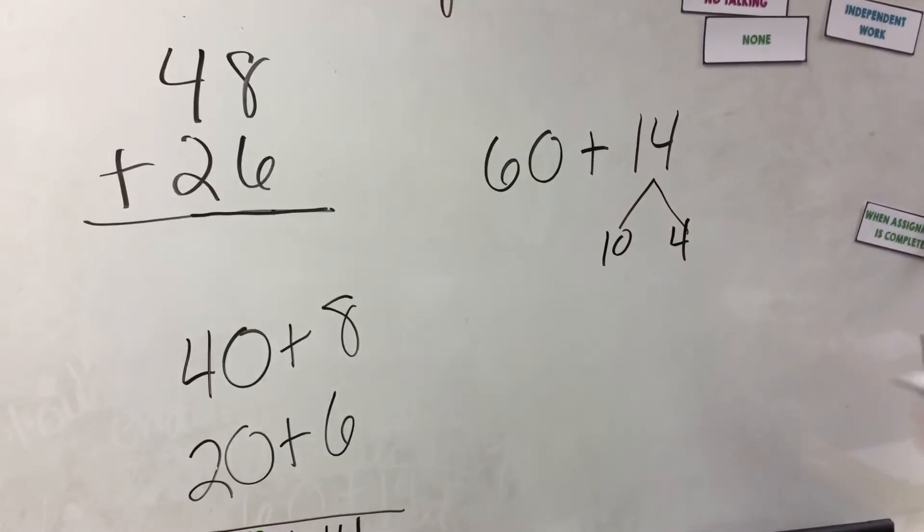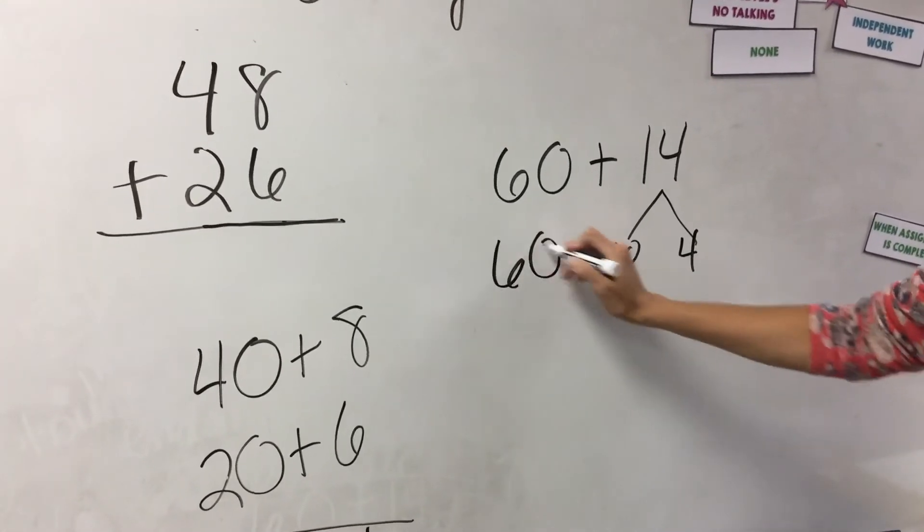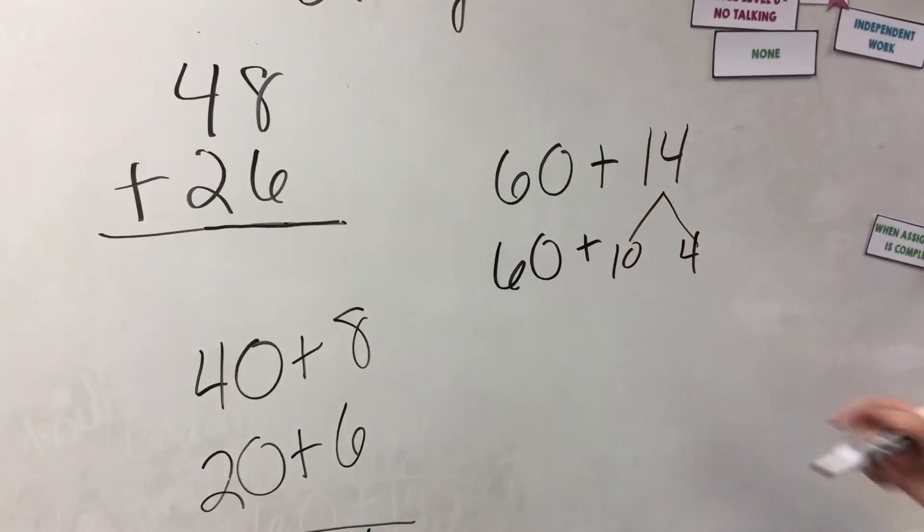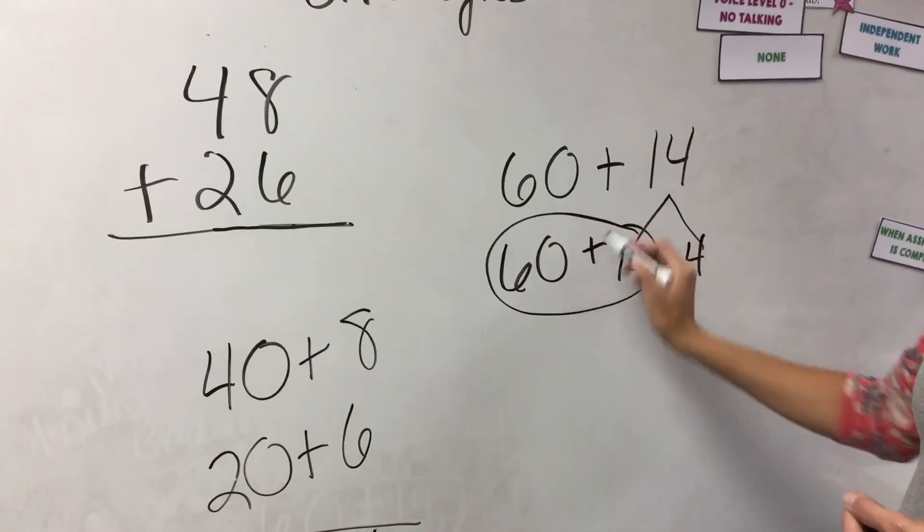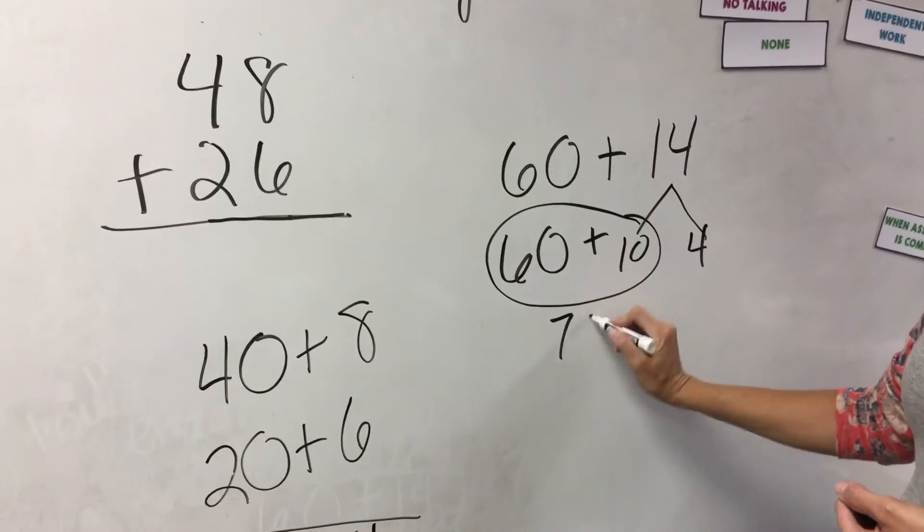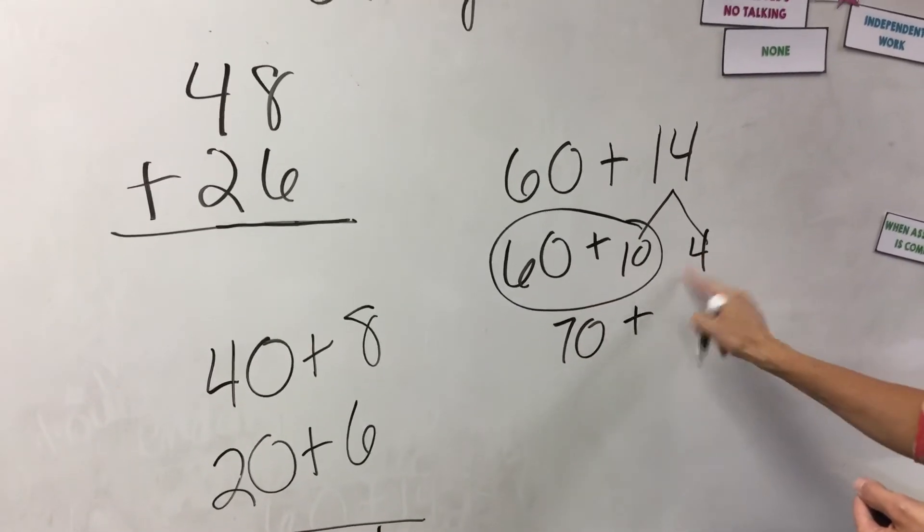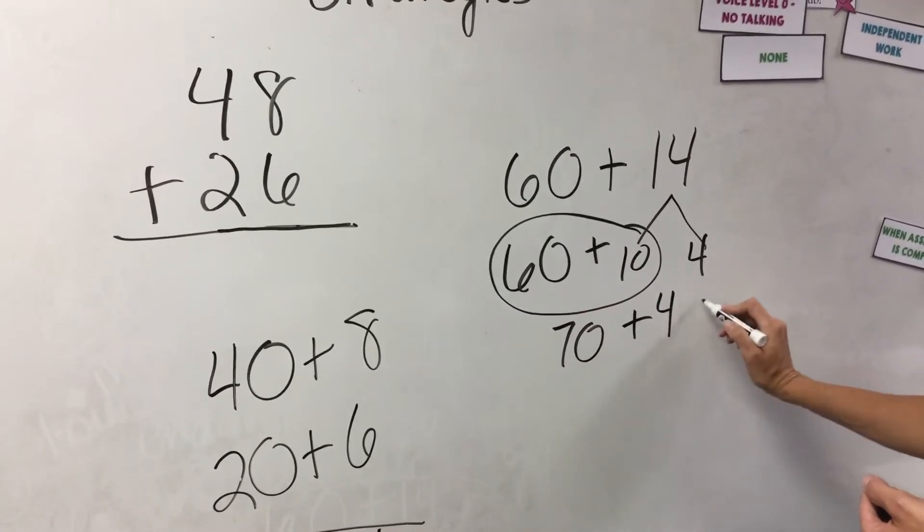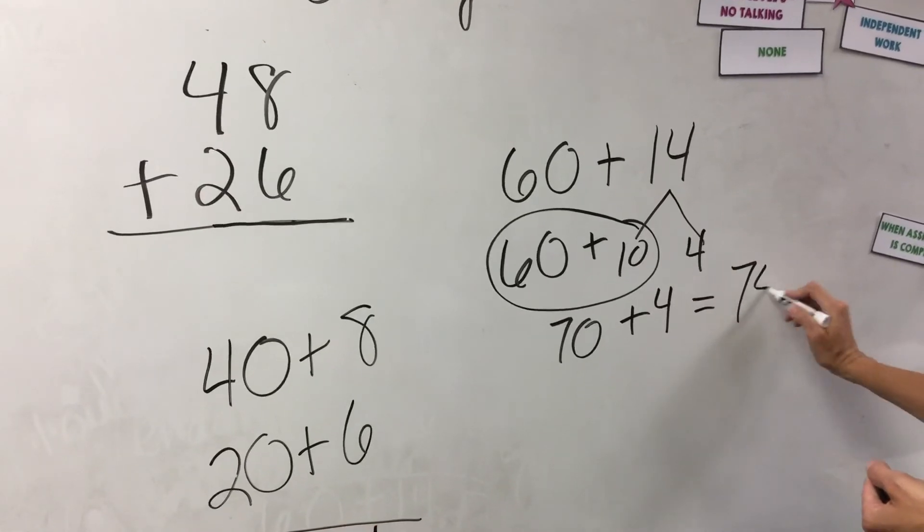and a 4 to make up that 14. And I still have my 60. So now it's a little easier for me to add that 60 plus 10, giving me 70, still have that 4 there, plus 4, is going to equal 74.